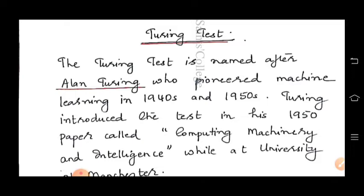What is the Turing Test? The Turing Test is a test done to find out whether a computer or a system has artificial intelligence.